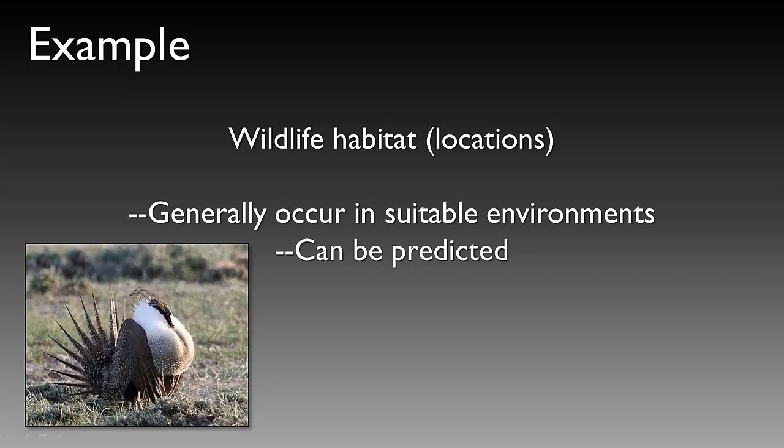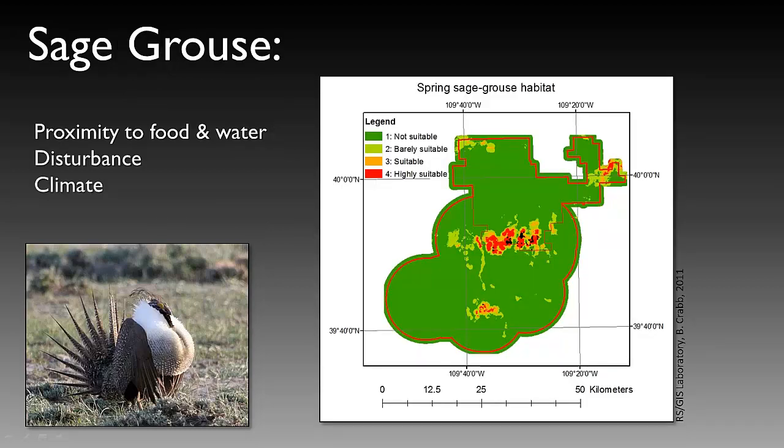Generally speaking, we can look at a species, look at where they live, what they prefer, different types of topography and precipitation, and start to make some predictions based on their environments. We were able to take that information through a number of spatial analyses and produce a map that would indicate where highly suitable habitat would occur for these sage grouse.